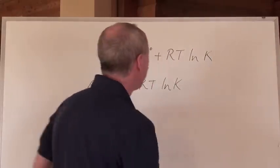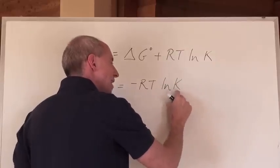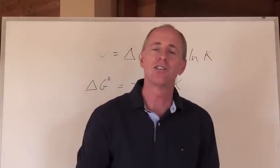Conversely, if the K value is less than one, then it's going to have a negative natural log. And a negative times a negative is a positive, which means the reaction is non-spontaneous.